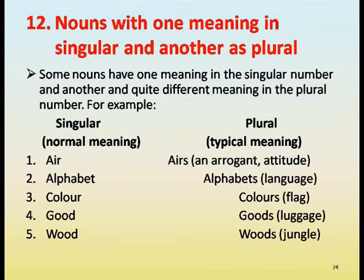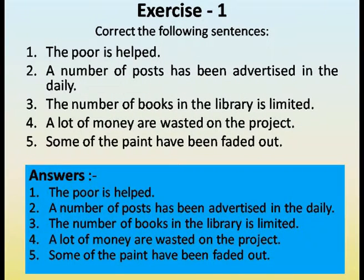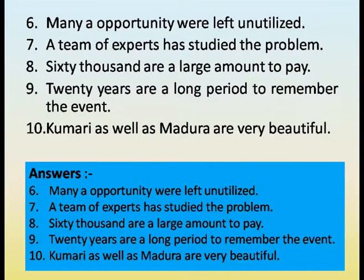Nouns with one meaning in singular and another in plural. Some nouns have one meaning in singular and quite a different meaning in plural. Examples: air (weather) versus airs (arrogant attitude); alphabet (letters) versus alphabets (languages such as English, Sanskrit, Greek); color (a single color) versus colors (flag); good (a good person) versus goods (luggage/belongings); wood versus woods (a jungle).